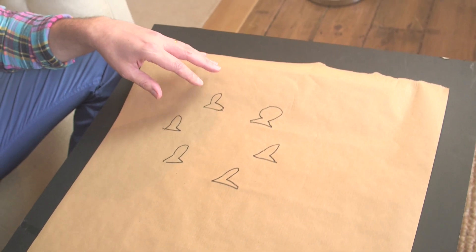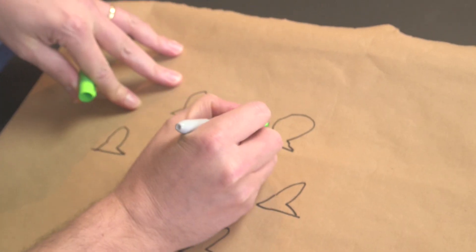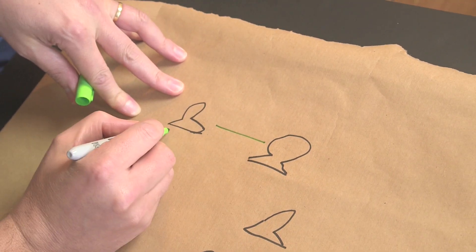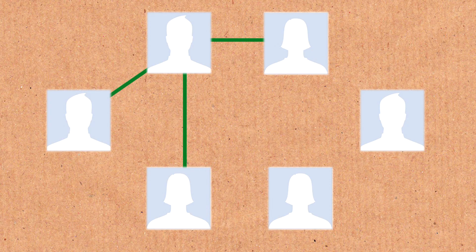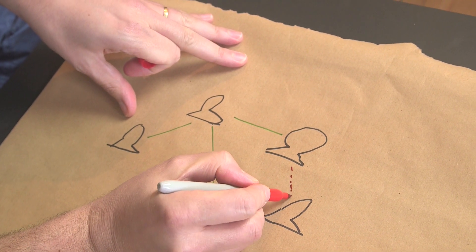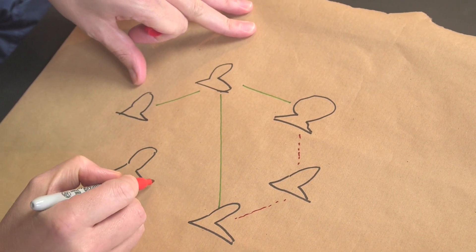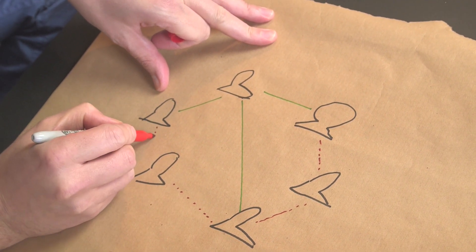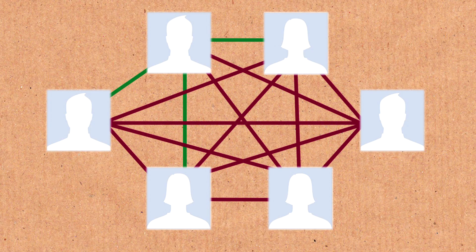We've got six people on Facebook. Now, there are certain relationships you can have. You can either be connected — we're going to say that's green — or you're not. So this guy doesn't know this person, this person's blocked this person, this person doesn't know they exist, they don't even speak the same language. If we try to count how many different arrangements we can have of six anonymous people on Facebook, there are actually 15 different connections between people.